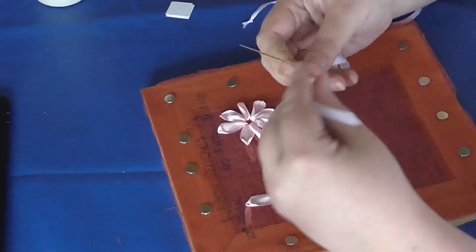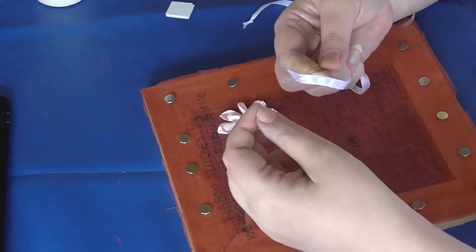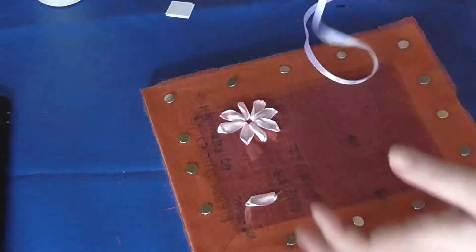So I'm threading my ribbon onto my needle, thread it through and tuck the needle through the top of the thread of the ribbon like that, and I'm knotting the end just to make sure that's secure.